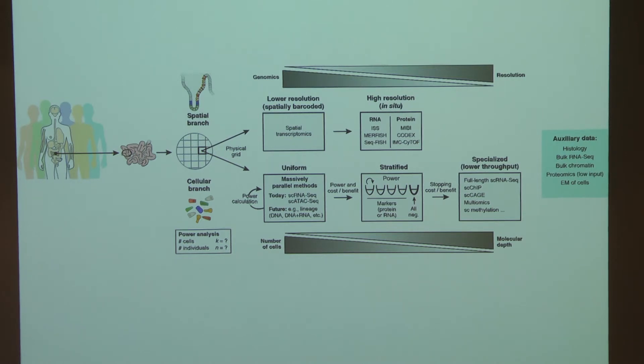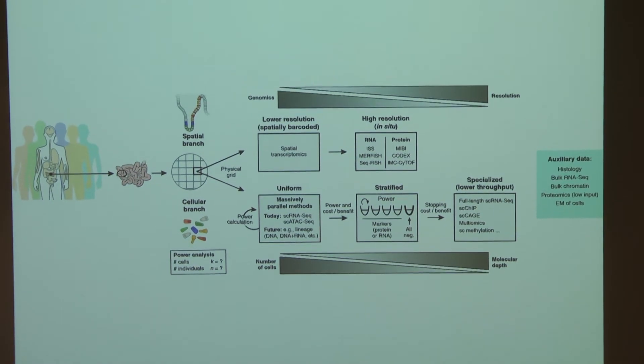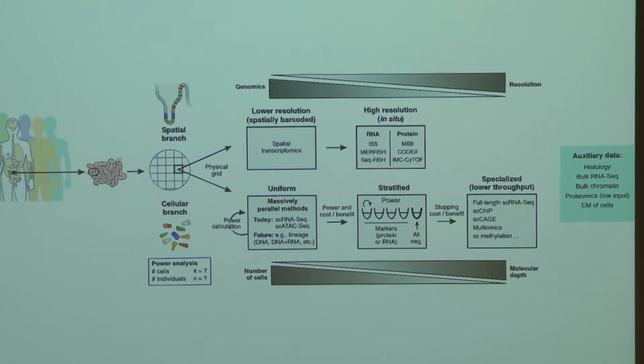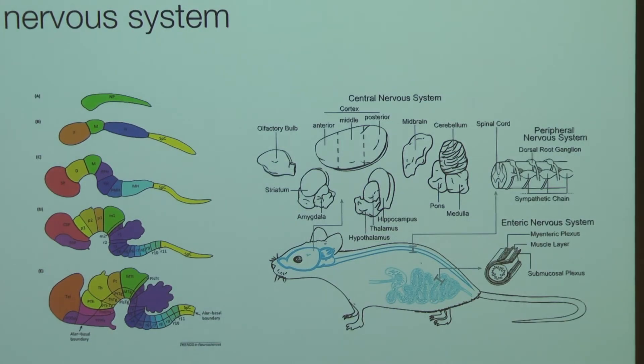But also what's not really mentioned on this slide is that these two branches come together in the coordinate framework. So you need to put together the cell types that you discover here with the spatial mapping and align them. And this is actually extremely important in the brain. And I think the brain is also one tissue where this has been done to quite a large extent. And we do have pretty good coordinate systems and anatomical taxonomies.